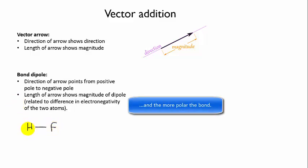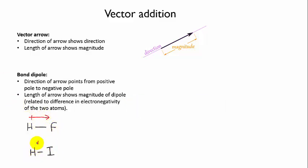If you remember our examples from the last video, we had hydrogen fluoride, which had a very large difference in electronegativity between the two atoms. So we draw its dipole as a long arrow. And hydrogen iodide had only a very small difference in electronegativity, so we draw its dipole arrow as a short arrow. In both cases the arrow is pointing towards the more electronegative atoms.